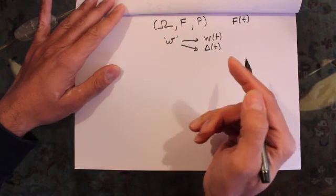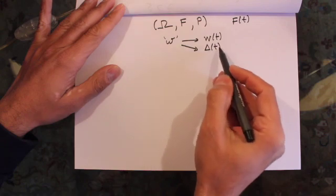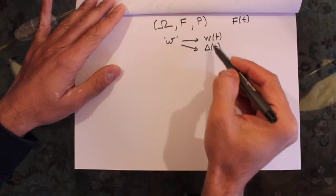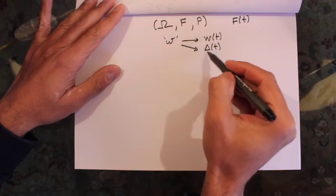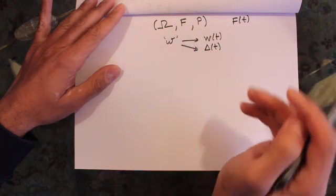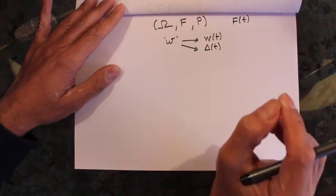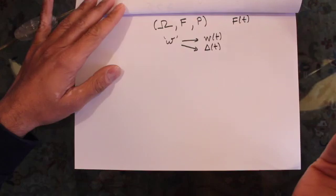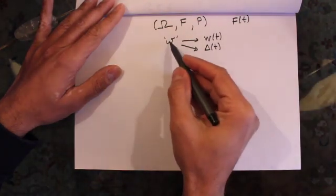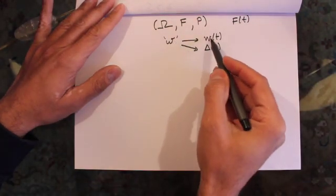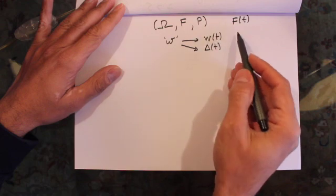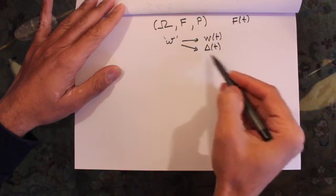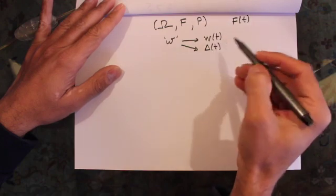So we'll get a path of this adapted stochastic process. So both of these paths are dependent on the omega that we get, or the outcome of the experiment that we get. And if you were to conduct the experiment again, we would get a different omega and hence you would get different paths of our Brownian motion and different paths of our adapted stochastic process.